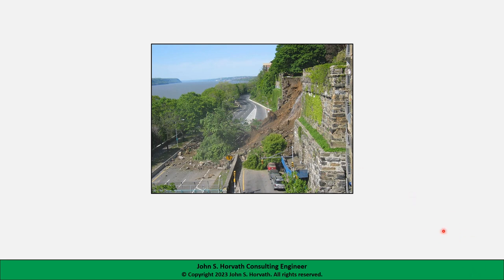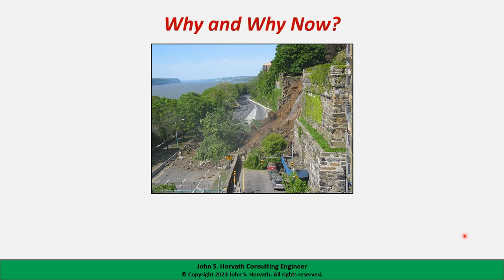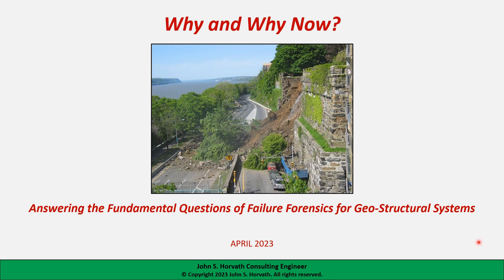This gravity retaining wall we see in this photo is a very classical example of a geostructural system. So when we have a failure of a geostructural system — as we see in this case, the partial collapse of this retaining wall — it is natural to ask the questions: why, and why now? Answering these questions are the fundamental aspects of performing a forensic investigation of the failure of a geostructural system.